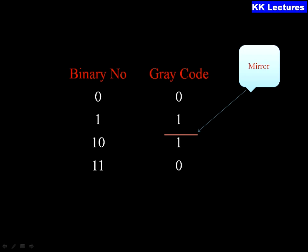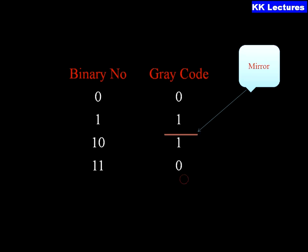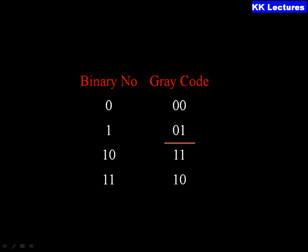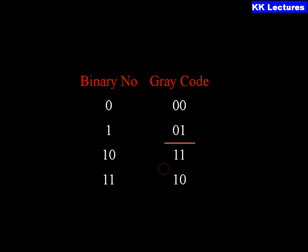Keeping zero as zero and one as one, place a mirror below that. The next binary numbers are two and three. The first code reflected from the mirror is one, and the next code reflected is zero. After writing one and zero below the mirror, add zeros above the mirror and ones below the mirror. This gives a two-bit Gray code: Gray code for two is 11, and Gray code for three is 10.